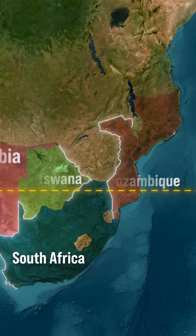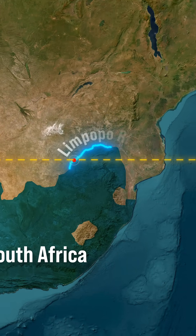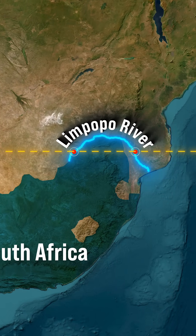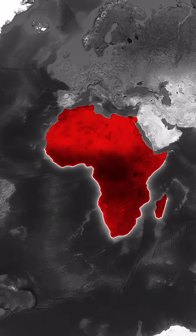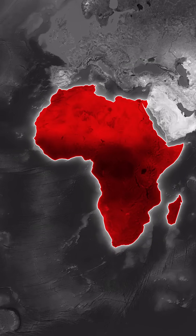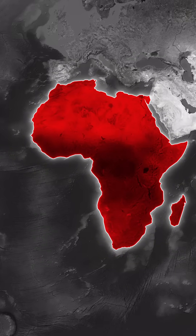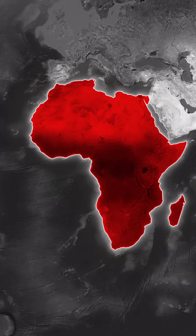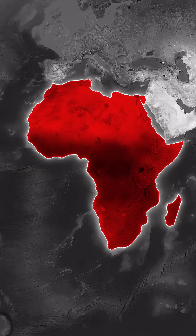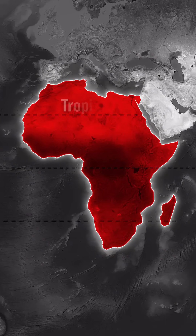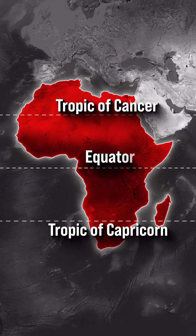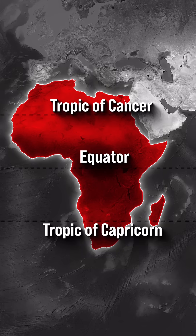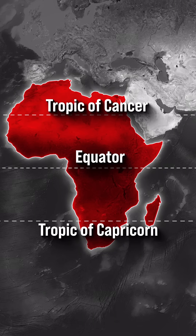Interestingly, in Africa, it crosses the Limpopo River twice. One fascinating fact is that Africa is the only continent where the equator, the Tropic of Cancer, and the Tropic of Capricorn all pass through.